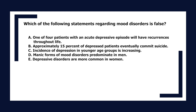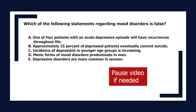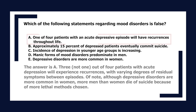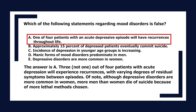Which statement regarding mood disorders is false? A. One of four patients with an acute depressive episode will have recurrences throughout life. B. Approximately 15% of depressed patients eventually commit suicide. C. Incidence of depression in younger age groups is increasing. D. Manic forms of mood disorders predominate in men. E. Depressive disorders are more common in women. The answer is D. Although depressive disorders are more common in women, more men than women die of suicide because of more lethal methods chosen.